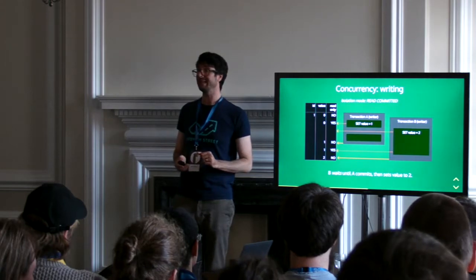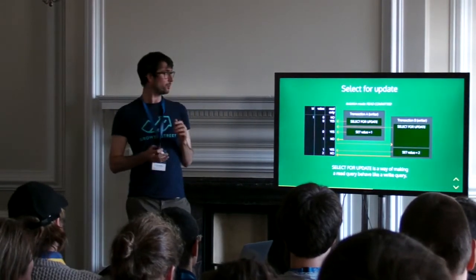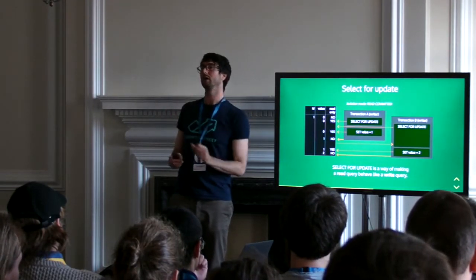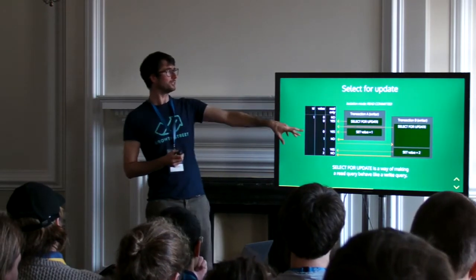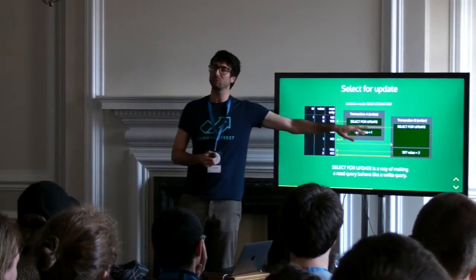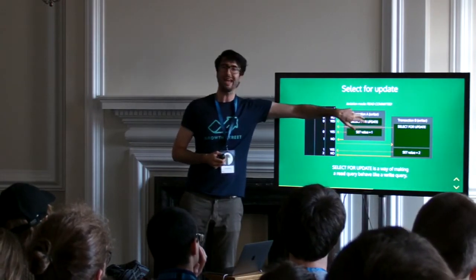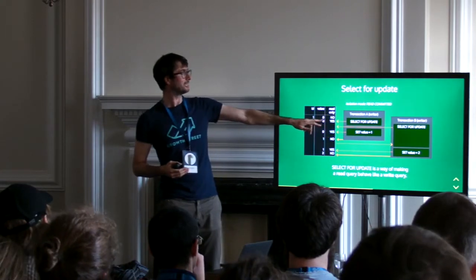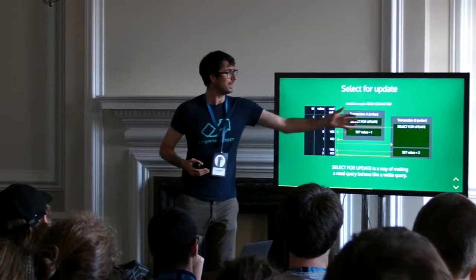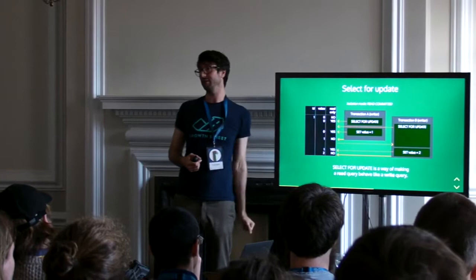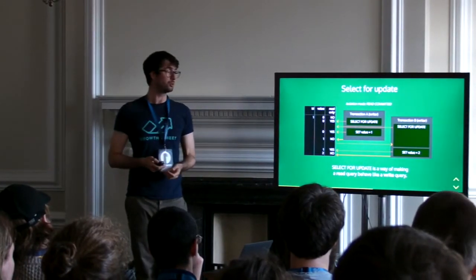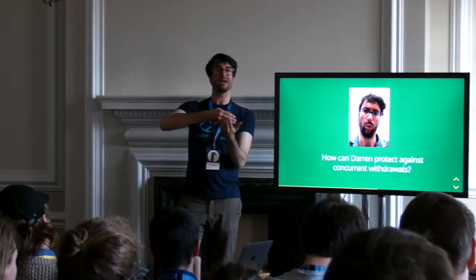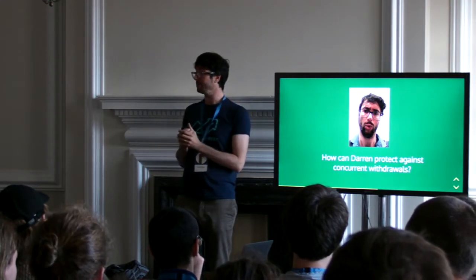There's one final tool in your toolkit for handling concurrency, which is select for update. The way I think of select for update is: it's a way of making a read query behave like a write query — in other words, obtaining a lock on the record. We've got two transactions that both begin with a select for update, and they both behave like writers, so they wait until they've got the right to write onto it.